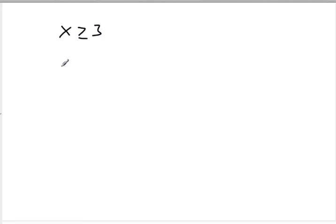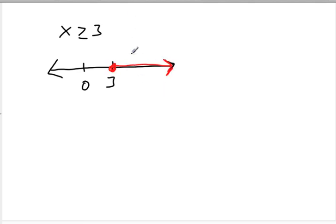If I'm graphing x is greater than or equal to 3, in interval notation the greater than or equal to gives us a bracket on the left, and 3 is the bottom boundary. The top boundary is infinity, so we write bracket 3 comma infinity parenthesis. Infinity always has a parenthesis — never a bracket — because you can't have something equal to infinity; it just goes on forever.